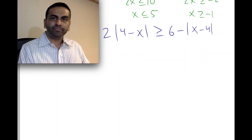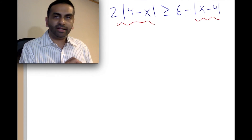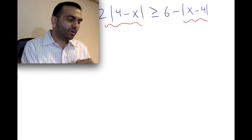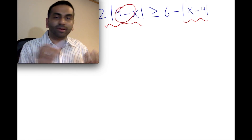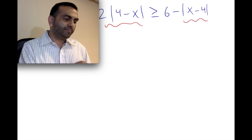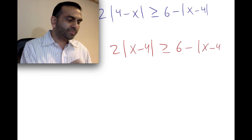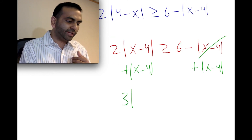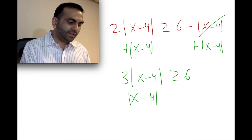The last problem has two absolute value inequalities. Believe it or not, they're like terms — the absolute value of (four minus x) and the absolute value of (x minus four) are the same thing. So rewrite as two times |x minus four| is greater than or equal to six minus |x minus four|. Add |x minus four| to both sides to get three times |x minus four| greater than or equal to six. Divide both sides by three: |x minus four| is greater than or equal to two.